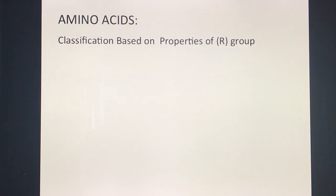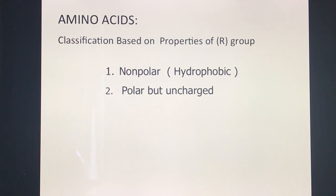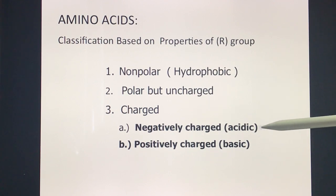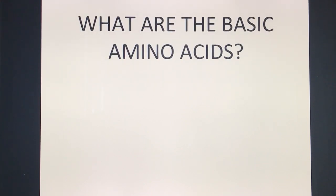The classification of amino acids is based on the properties of the R group. First, we have the non-polar amino acids, which are hydrophobic. Then we have polar amino acids that are uncharged. Then we have charged amino acids, which are either acidic or basic. The acidic amino acids are negatively charged, while the basic amino acids are positively charged.